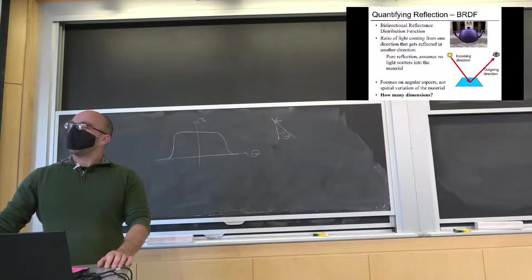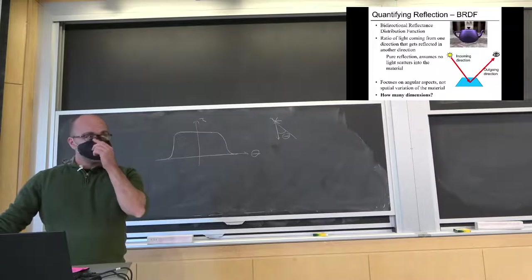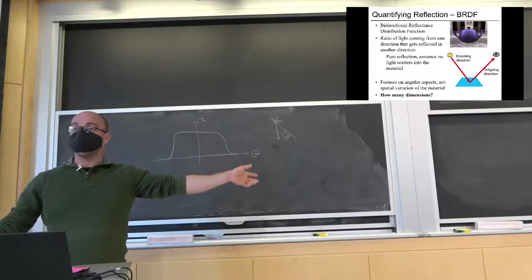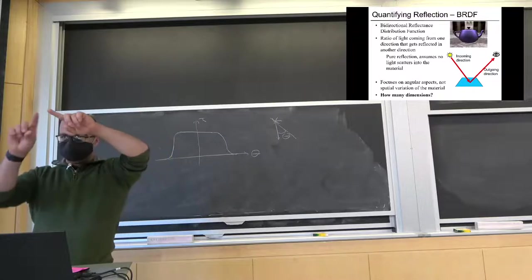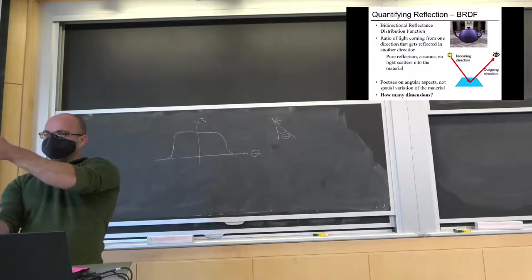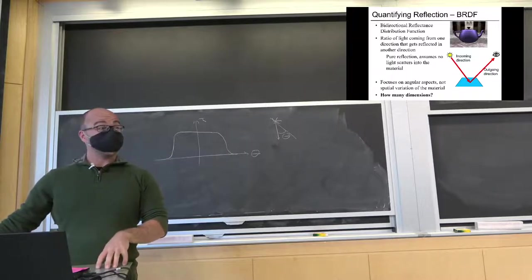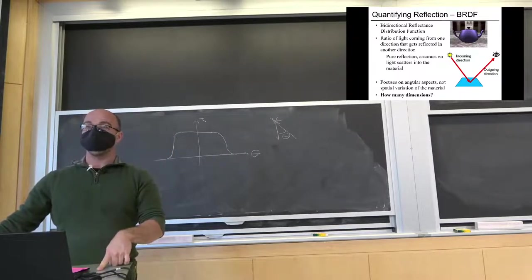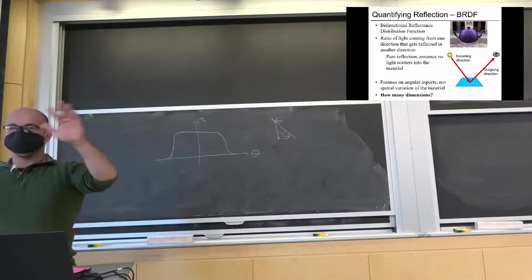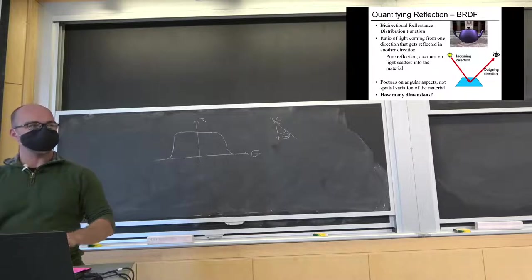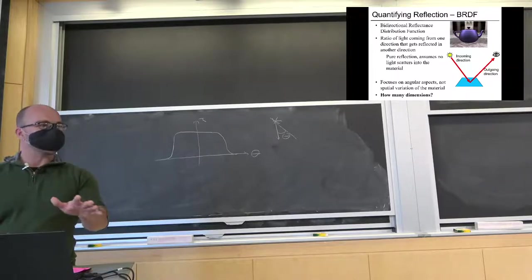The BRDF does not model all possible materials. There are many materials where light comes in at one location and comes out somewhere else — translucent materials, or hair, which is particularly weird: blonde hair apparently has two lobes, one shiny and one underneath. Those kinds of things are not captured by our BRDF because our BRDF is sitting at one point, so it can't deal with spatial stuff. Also, we haven't described composite materials where as you move along a surface the material itself changes — that just means the BRDF becomes a function of position. But it's a powerful tool that describes a lot of basic materials.